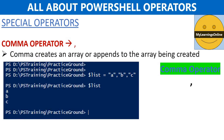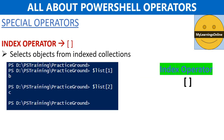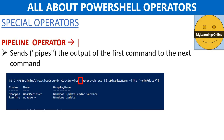Next one is the comma operator. The comma operator creates an array or appends to an array being created. In the screenshot, we can see an array created using the comma operator. Next one is the index operator, which is used to select objects from an indexed collection. In the screenshot, we can see we are fetching the first and second elements from the array created in the last slide.